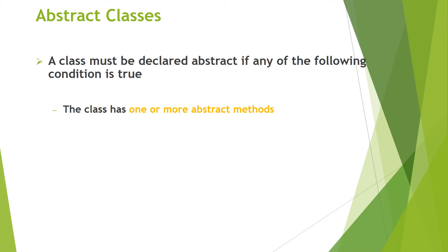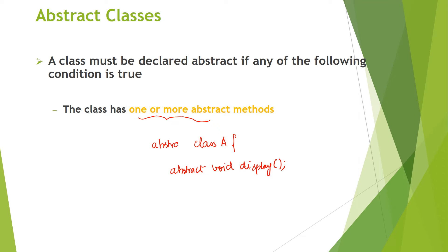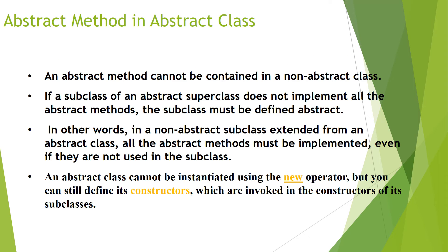There is one key condition for a class to be declared as abstract: if a class has even one or more abstract methods, that class must be declared as abstract. For example, if inside a class A you declare a method void display() as abstract, then class A must also be declared as abstract — regardless of how many other methods, abstract or non-abstract, are also present.